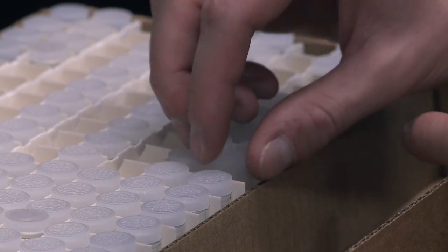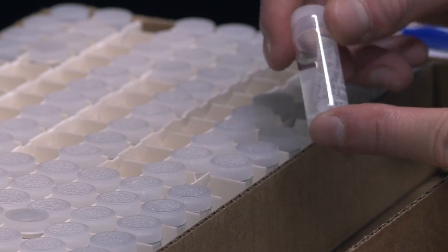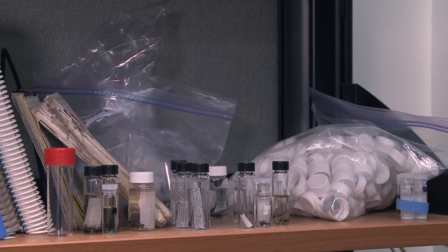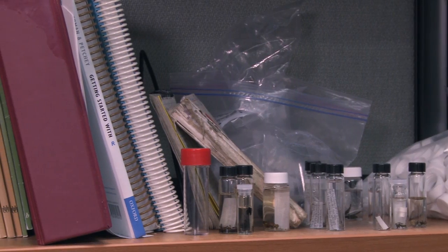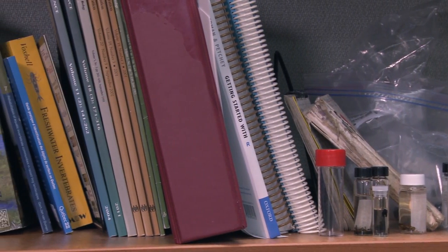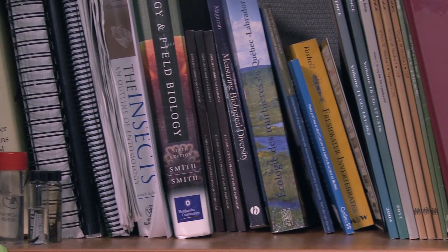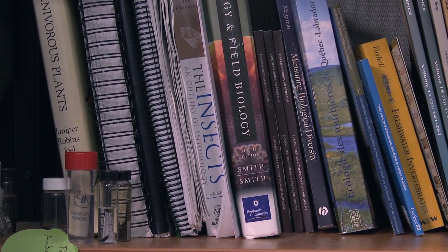Moi, précisément, je me suis intéressé aux dytiques, qui sont des coléoptères aquatiques, puis aux araignées. Et pourquoi avoir choisi ces groupes-là? C'est pour deux raisons principales. La première, c'est que ces deux groupes-là ou ces deux taxons-là sont très diversifiés au Québec. Étymologiquement, arthropode, ça réfère à arthros pour articulation. Vous savez, arthrite, par exemple. Puis pod pour podos, c'est deux mots grecs. Podos, ça veut dire patte. Fait que patte articulée.